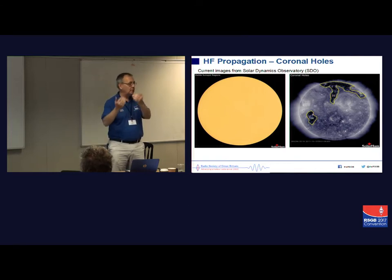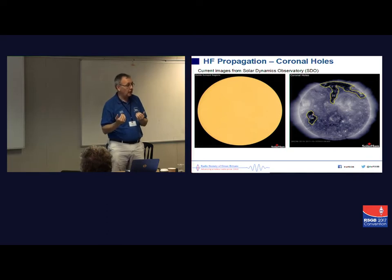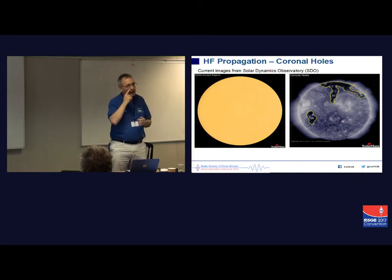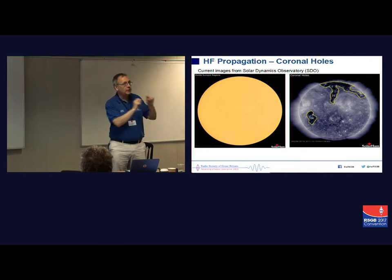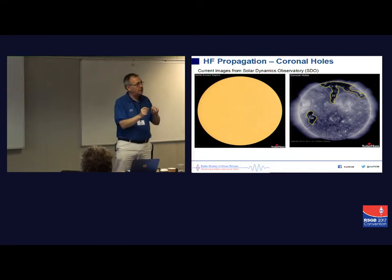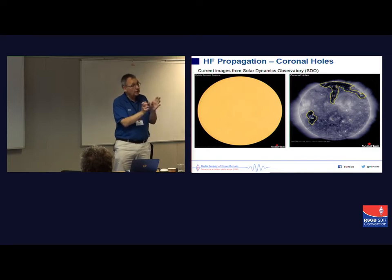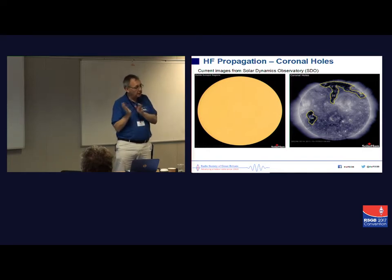Ultimately what happens is maximum usable frequencies decline. You see it on the bands, and then you've got a disturbed period for about two or three days until it all clears up. Monday, Tuesday, Wednesday this week we'd had three or four days of very low K-indices, very settled bands — and it was quite good. This is what we try to predict every week.